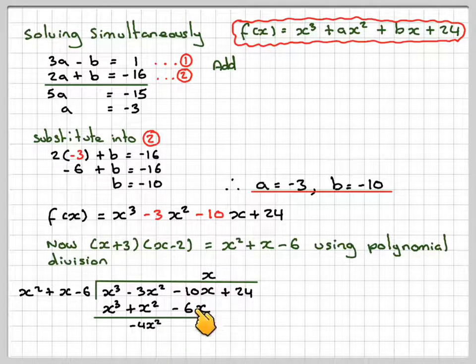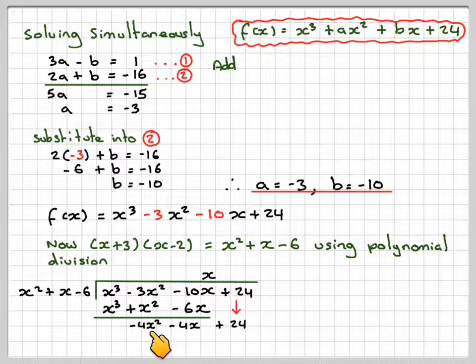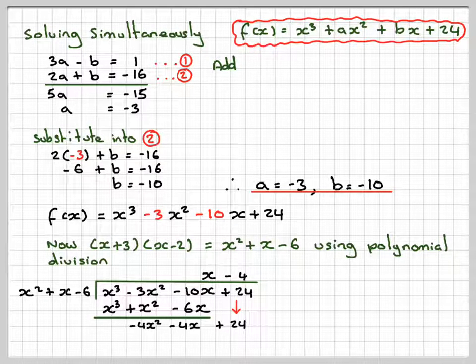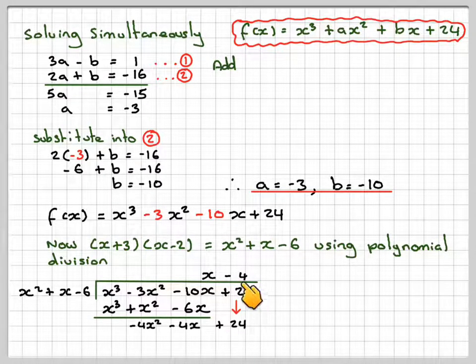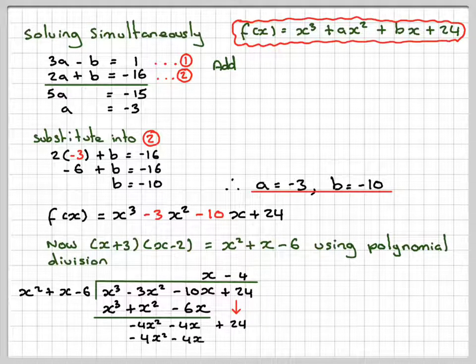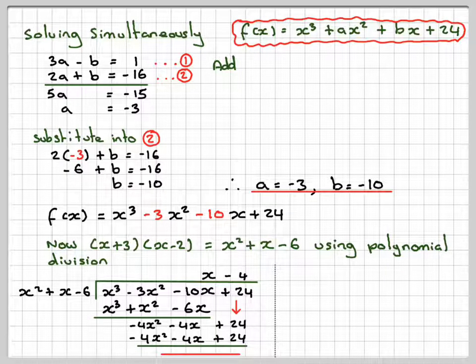-10 minus -6 gives me -4x. Bring down the 24 and then -4x² divided by x² gives me -4. Multiplying, -4 times x² is -4x², -4 times x gives me -4x, -4 times -6 is 24. No remainder, which is what we expected.